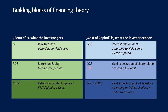The same logic applies before financing. The return on capital employed (ROCE) is a return for all investors, calculated by dividing EBIT by capital employed — which is equity plus debt. The opposing measure is the WACC, the weighted average cost of capital, which is the average yield expectation of all investors according to the capital asset pricing model, yield curve, and credit spread, since both cost of debt and cost of equity are components of the WACC.